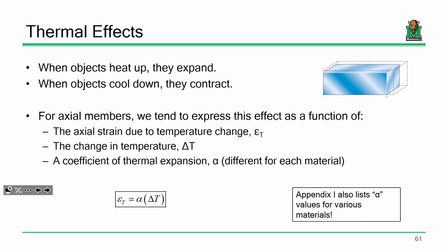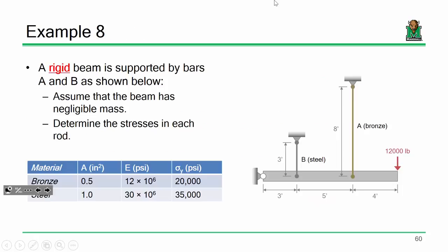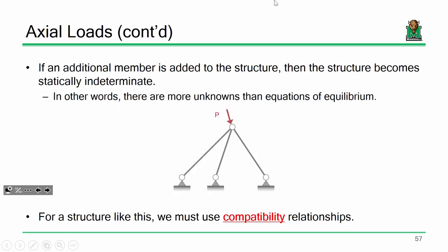So let's talk a little bit about where we left off and where we're headed. We spent the last lecture looking at problems that are indeterminate — in other words, problems where the number of unknowns exceeds our number of available equations of equilibrium.